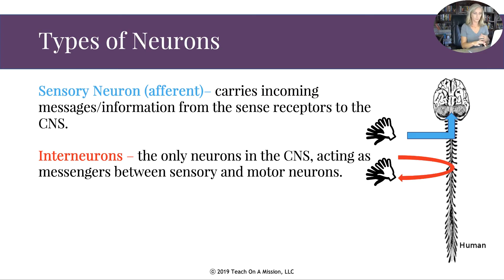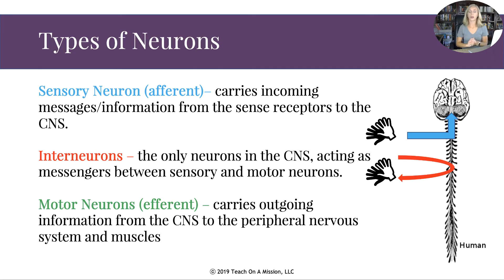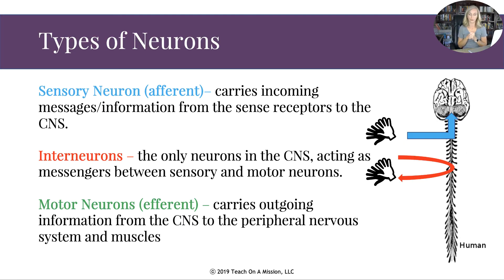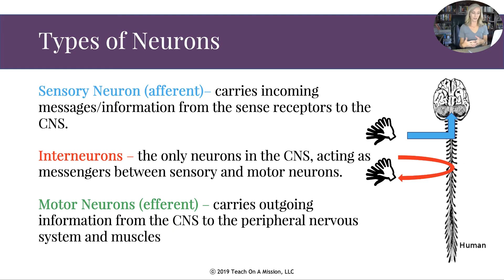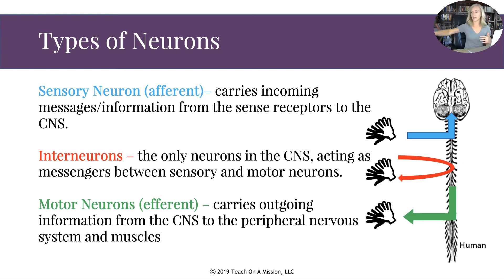Motor neurons are called efferent neurons. They carry outgoing information from the central nervous system to the peripheral nervous system and muscles. A helpful memory trick: 'efferent' starts with an E, and so does 'engine' — and engine and motor are related. Motor neurons carry outgoing messages and allow you to move your muscles — doing bicep curls, brushing your teeth — messages from your brain to your muscles.